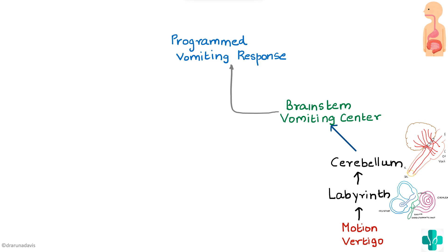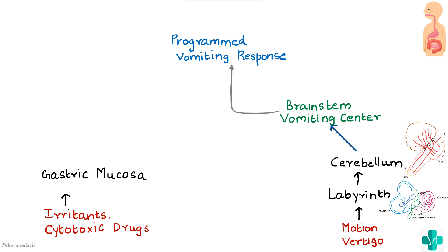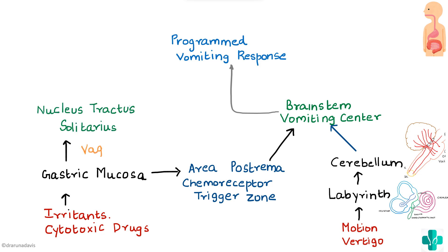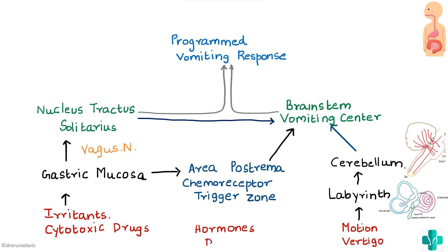Certain irritants and cytotoxic drugs can also cause vomiting via two pathways. First, they irritate the gastric mucosa, which sends information to the chemoreceptor trigger zone in the area postrema, which then stimulates the brainstem vomiting center. Second, the gastric mucosa sends signals via the vagus nerve to the nucleus tractus solitarius, which also stimulates the brainstem vomiting center to produce the programmed vomiting response.